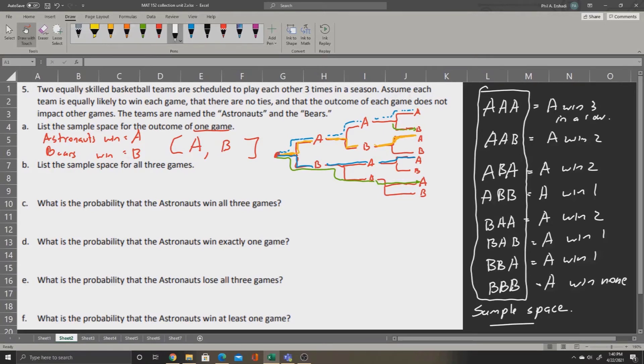Now, in order to find the probability that the Astronauts win all three games, we have to count the outcomes in the sample space. So we can count this and say 1, 2, 3, 4, 5, 6, 7, 8 members in the sample space. And in those eight members, there's only one where the Astronauts win three in a row. And that's the top option. So we'll say that there is one where the Astronauts win three in a row.